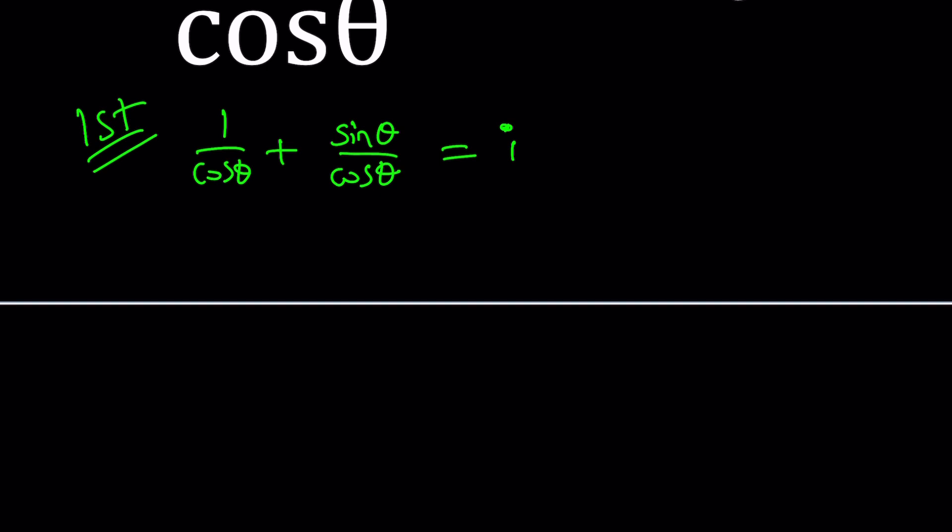What is 1/cos θ? It is sec θ, right? The reciprocal of cosine is called secant. And sin θ/cos θ, as you should know if you've done a little bit of trigonometry, is equal to tan θ, and this whole thing equals i. So you might be thinking, how do we solve something like this?